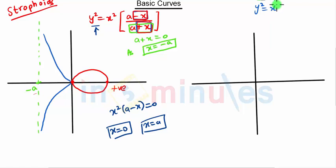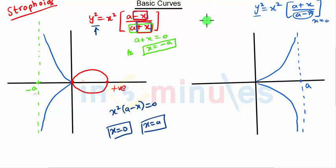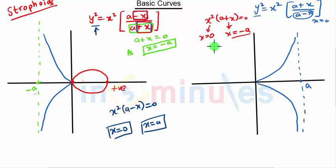Similarly, we have another curve: y² = x²·(a+x)/(a-x). When we put the denominator equal to zero we get x = a, which is the asymptote — so the asymptote is on the positive side. Putting y = 0, we get x²·(a+x) = 0, so x = 0 or x = -a are the two points on the x-axis, and the loop is on the negative side.